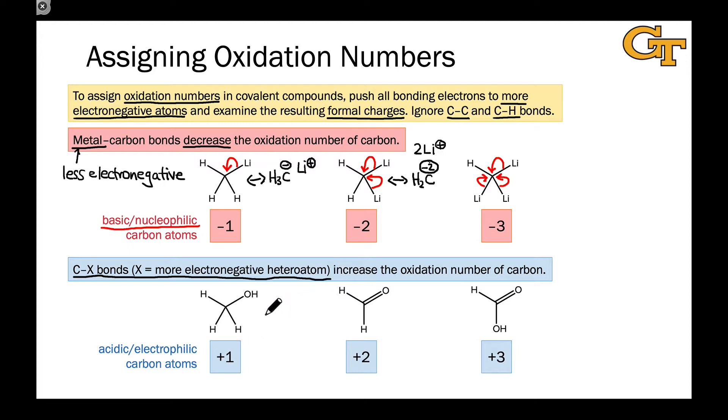the oxidation number of carbon increases by one unit for each of these C-X bonds. And here we don't really distinguish between sigma and pi bonds.